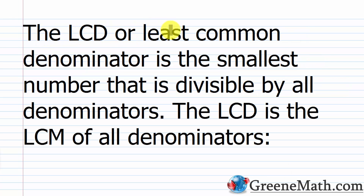The LCD, or least common denominator, is the smallest number that is divisible by all denominators. The LCD is the LCM of all denominators. A lot of students get confused when talking about LCD, LCM, GCF, and GCD. The LCM is the least common multiple — given two, three, or four numbers, you want to find the least common multiple. When we talk about the least common denominator, we're working with fractions and we find the least common multiple of the denominators. That is the LCD.